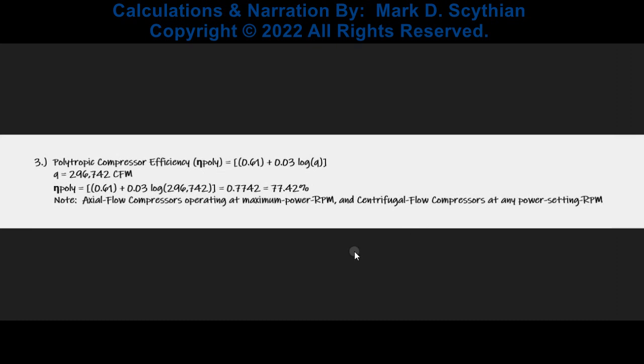Next, we compute the polytropic compressor efficiency. For this axial flow compressor spool configuration, a polytropic compressor efficiency of 77.4% is calculated.